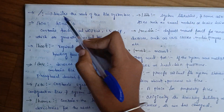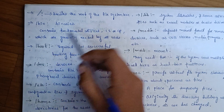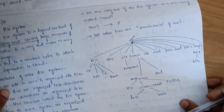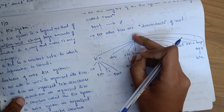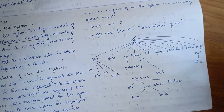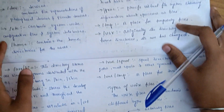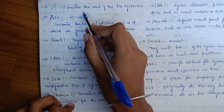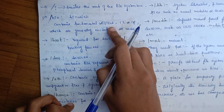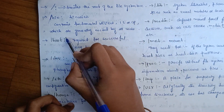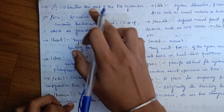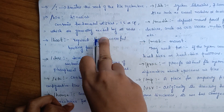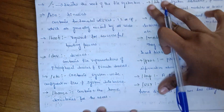The slash denotes the root of the file system tree. BIN is a child (outcome) of the root node. Slash BIN stands for binaries. BIN contains the fundamental utilities such as LS, CP, which are generally needed by all users.